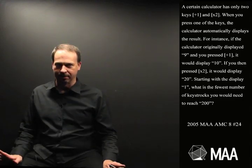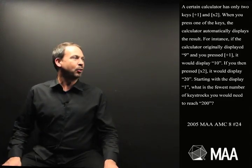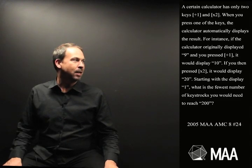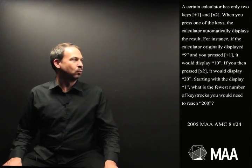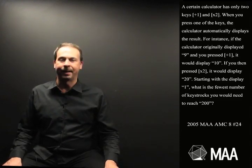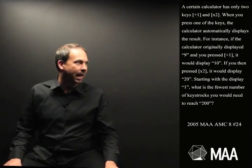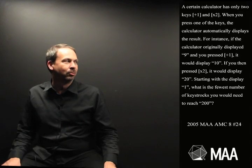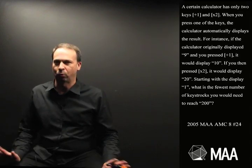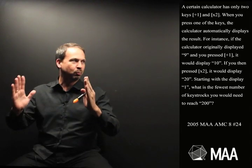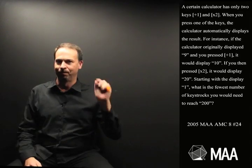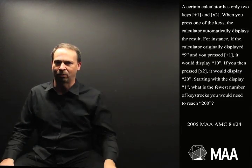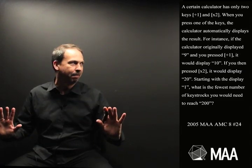For instance, if the calculator originally displayed 9 and you pressed plus 1, it would display 10. If you then pressed times 2, it would display 20. Two buttons — plus 1, times 2. Press the button and it does it to whatever number is on the screen right then and there.